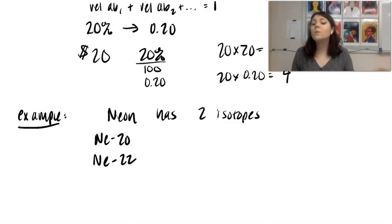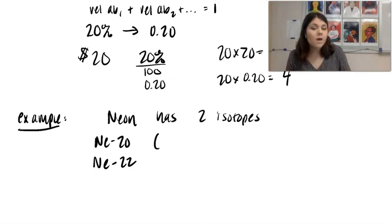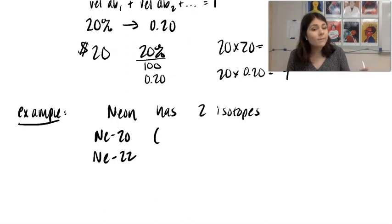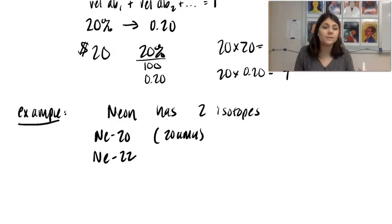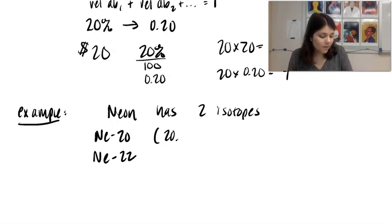All right. So we have neon-20 and we have neon-22. And again, an isotope is just same number of protons, just a different amount of neutrons. So here, the atomic mass for neon-20 is 20 AMU.